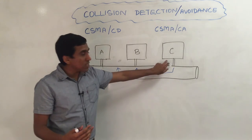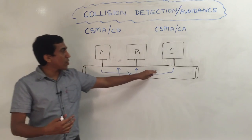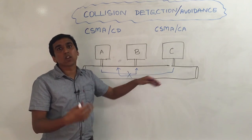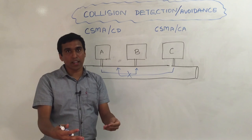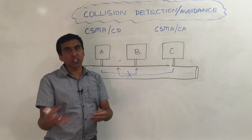In that, what happens is C, before it actually starts sending data to A, tries to see if there is a conversation going on already before it sends. So that's CA or collision avoidance.